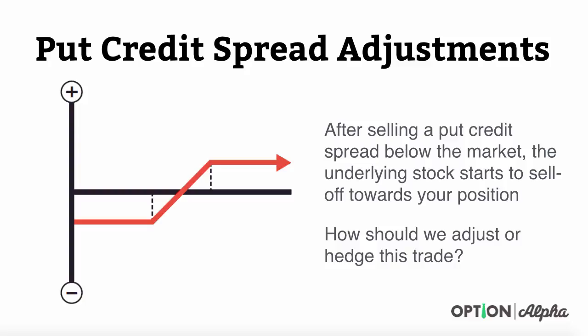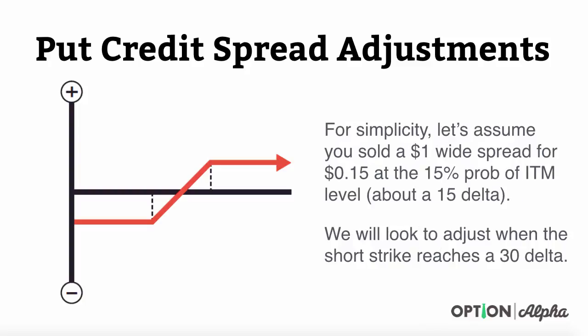After selling a put credit spread below the market, let's say that the underlying stock starts to sell off towards your position. This is the ultimate fear of most traders — you enter this strategy with a high probability of success, and then the stock starts to sell off, testing your position because you don't make money as the stock falls. The question becomes: how should we hedge or adjust this trade going forward?